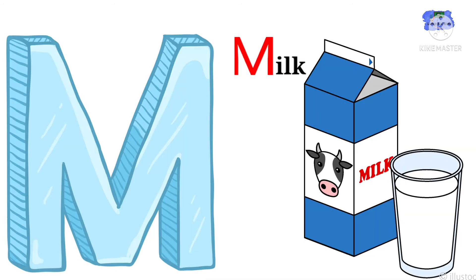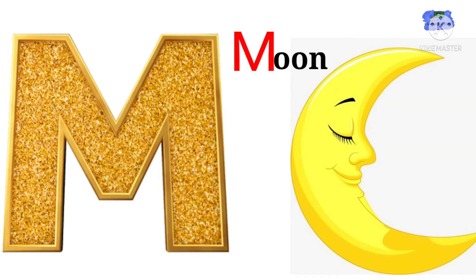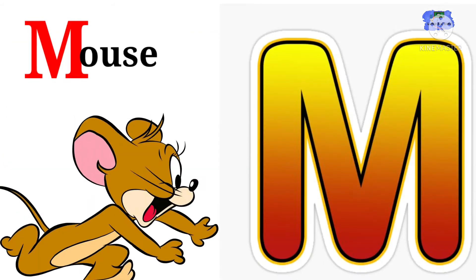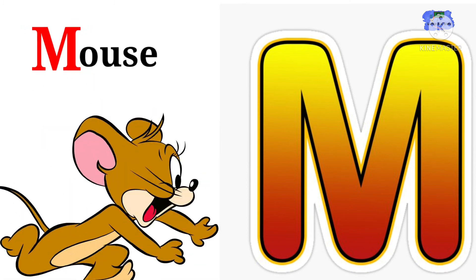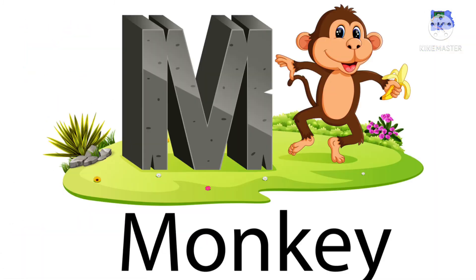M for milk. Milk starts with the first letter M. M for moon. Moon starts with the first letter M. M for mouse. Mouse starts with the first letter M. M for monkey. Monkey starts with the first letter M.